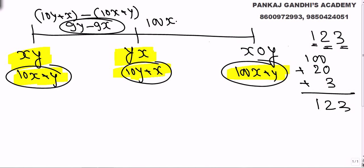So what it did go is 100x plus y minus 10y plus x. In one hour from this to this what do we get? So what we get here is 99x minus 9y.